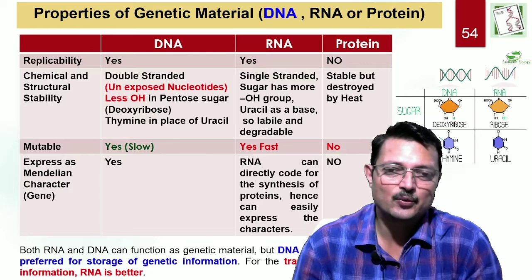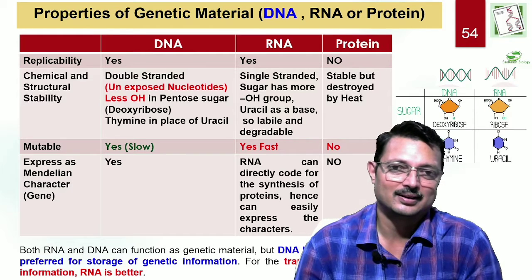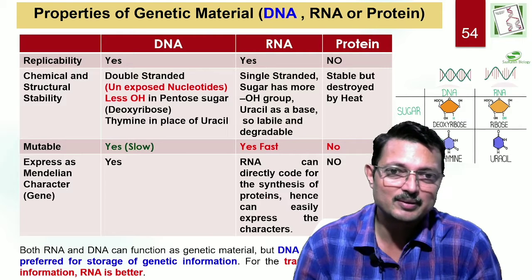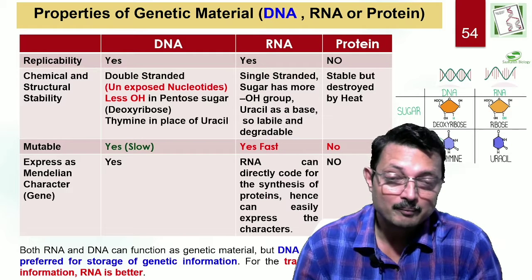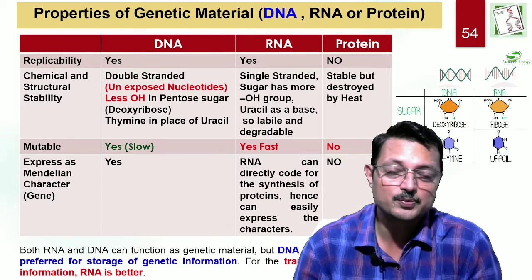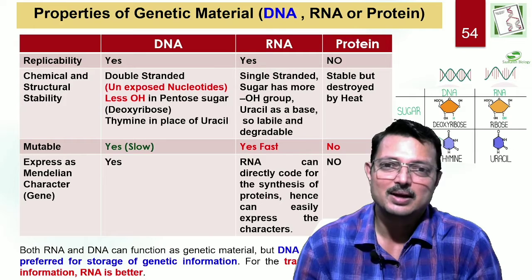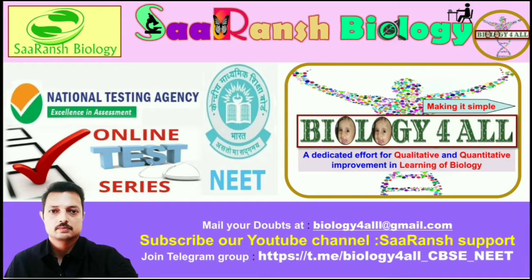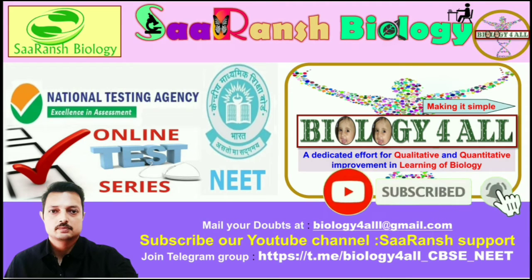With this we come to the end of this part. In the next part we will be talking about some more important processes — the genetic code, the mechanism of replication, transcription and translation. Till then, happy reading. Take care. Students, keep ahead of your friends by subscribing to this channel and hit the bell icon to get notified when a new video is coming your way.